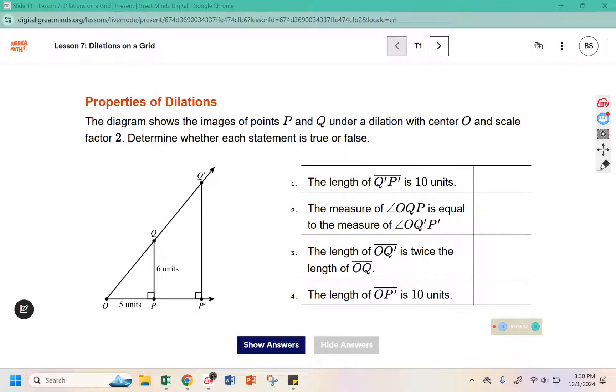The diagram shows the images of points P and Q under a dilation with center O and scale factor 2. Determine whether each statement is true or false. The length of Q prime P prime is 10 units, that is this one here. Remember the original is 6 units and the scale factor is 2, so is that true or false?